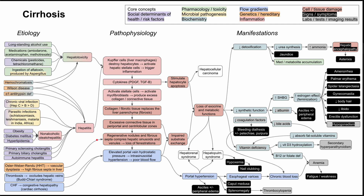This is a mechanism of disease map for cirrhosis. I'll be talking about the many etiologies of cirrhosis, the pathophysiologic mechanism of cirrhosis, and some of the manifestations of this disease. This chart isn't completely exhaustive of the manifestations of cirrhosis. Cirrhosis affects many other organ systems like the kidneys and the lungs, and I couldn't fit everything downstream of those here, but I've covered the highlights and most of the important mechanisms.